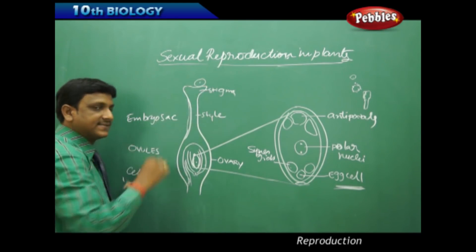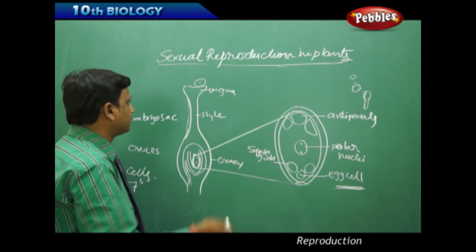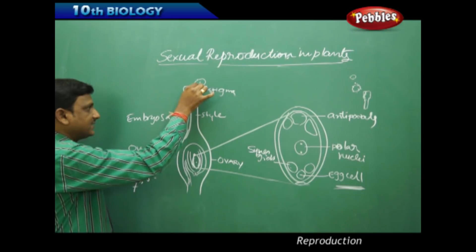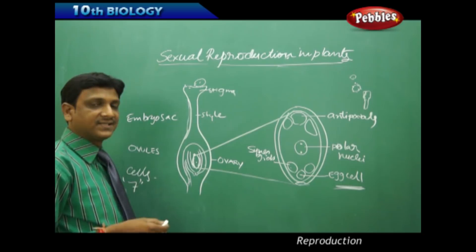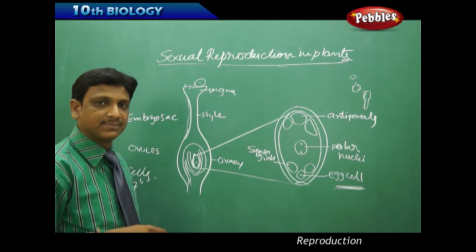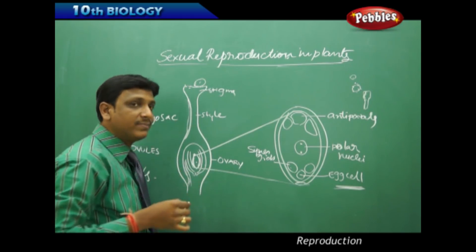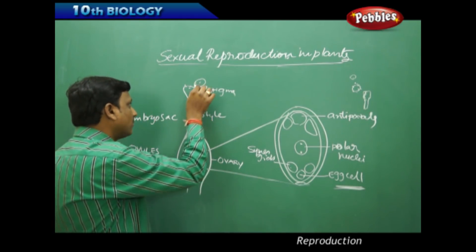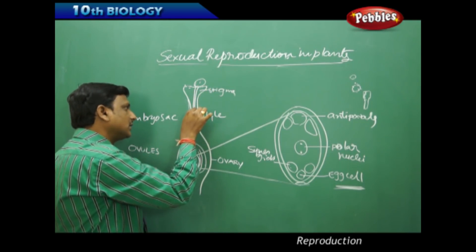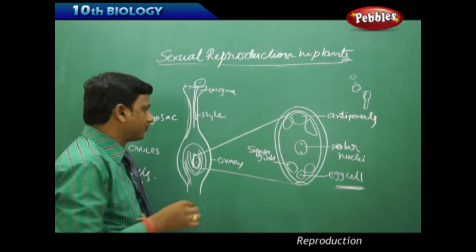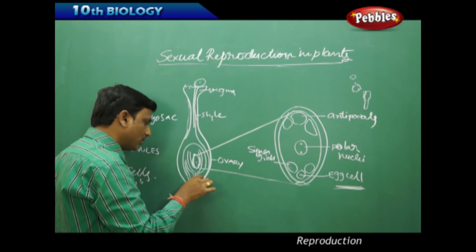Whenever the pollen grain reaches the stigma — either by insect or by wind — pollination takes place. The pollen grains land on the stigma, where sugary substances attract insects. After the pollen grain arrives, it germinates — that means the pollen grain produces a long pollen tube. This tube passes down through the style and enters the ovule, reaching all the way to the embryo sac.